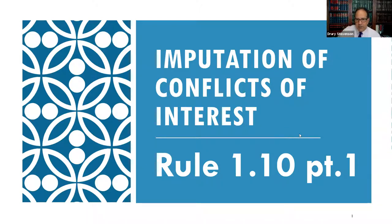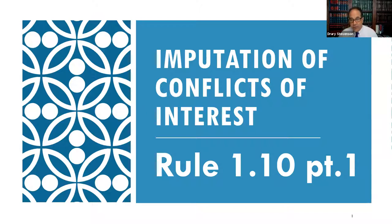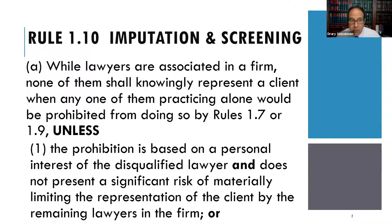Imputation is addressed in Rule 1.10. If you're watching these videos in order, you may remember that at the end of Model Rule 1.8, there was a provision in Section K about imputation of conflicts just in Rule 1.8 about personal conflicts of the lawyer. Note that in 1.10(a), we're talking about imputing 1.7 conflicts and 1.9 conflicts — conflicts from clients. 1.7 covers current clients and 1.9 covers former clients.